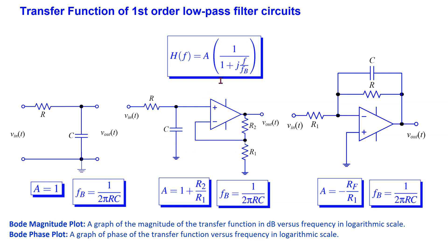The transfer function is a complex quantity having magnitude and phase. We are interested in the Bode magnitude plot, which is a graph of the magnitude of the transfer function in decibels versus frequency in the logarithmic scale, and the Bode phase plot, which is the graph of the phase of the transfer function versus frequency in logarithmic scale.